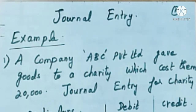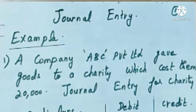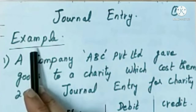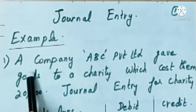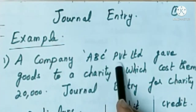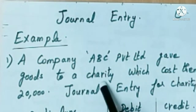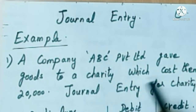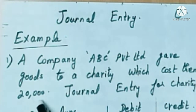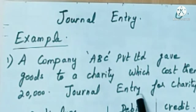Welcome to my channel. Today's topic is journal entry. Let's see how to pass the journal entry for charity given. Example: a company ABC Private Limited gave goods to a charity which cost them rupees 20,000. Pass journal entry for charity.